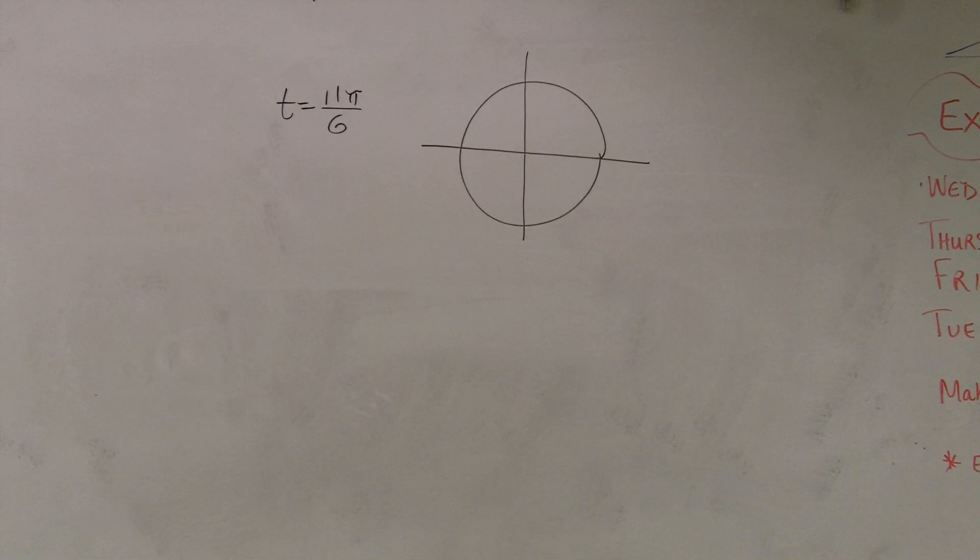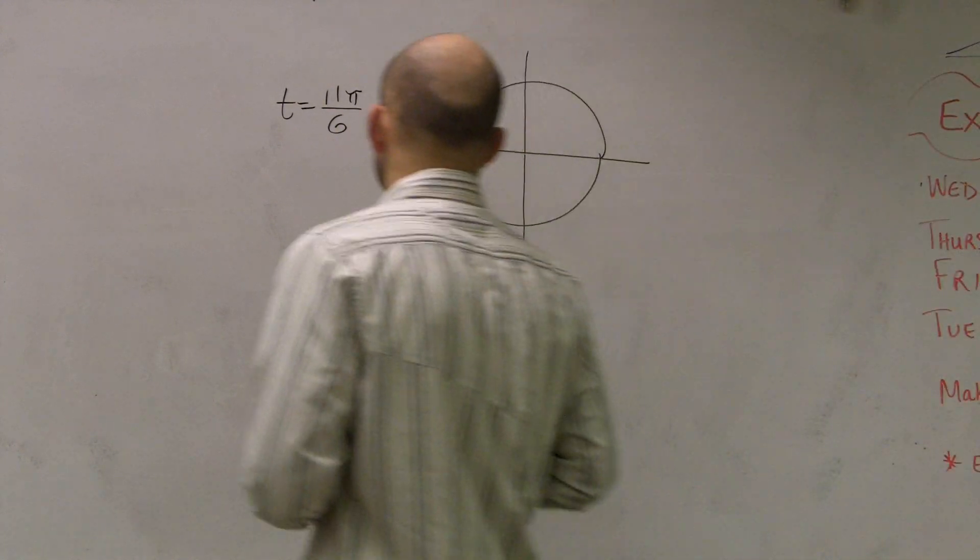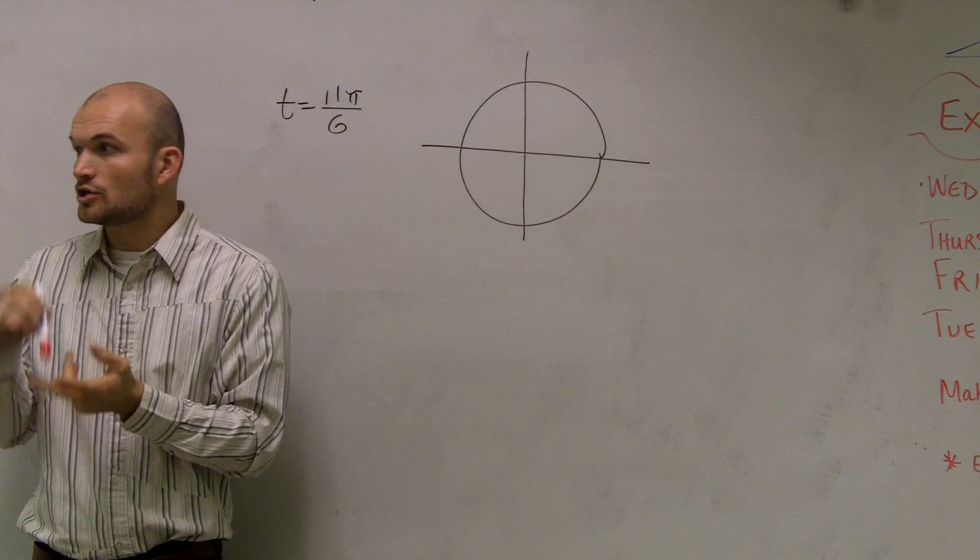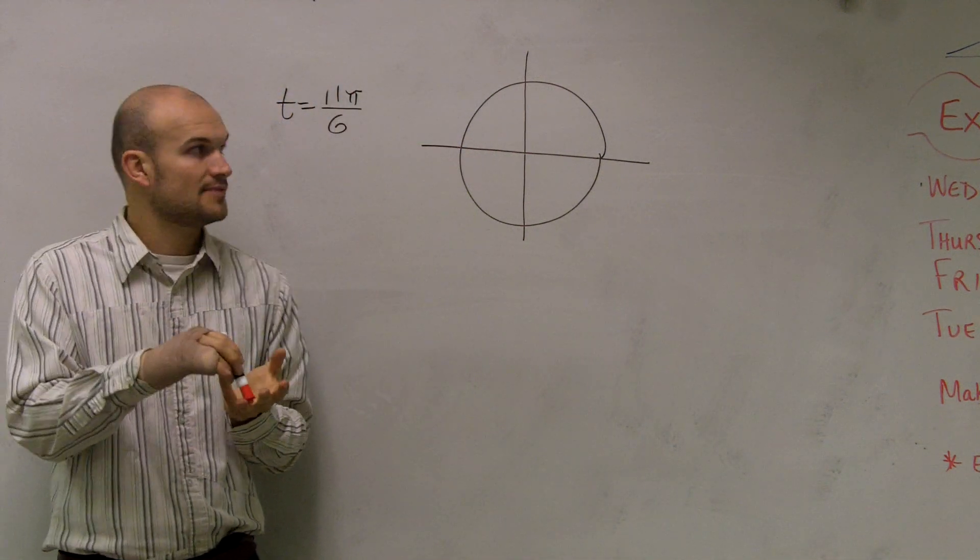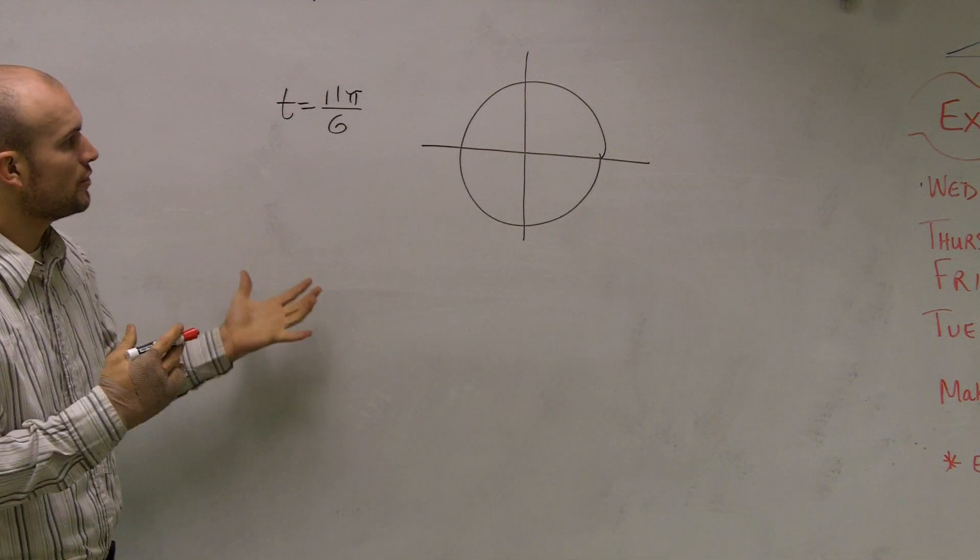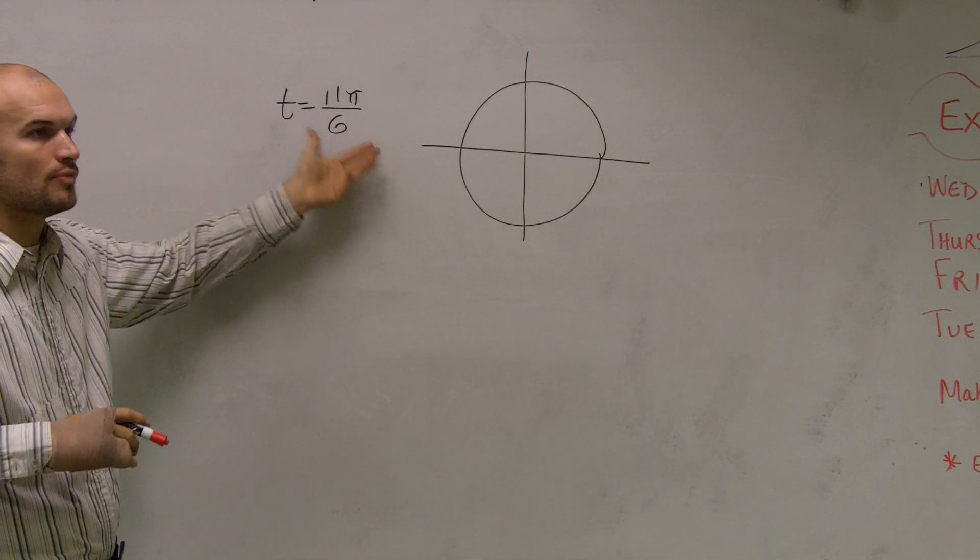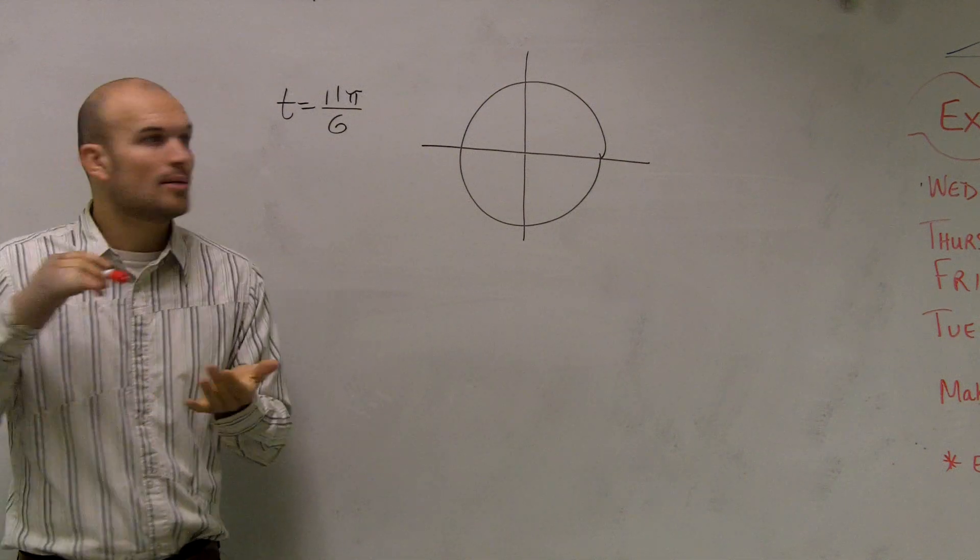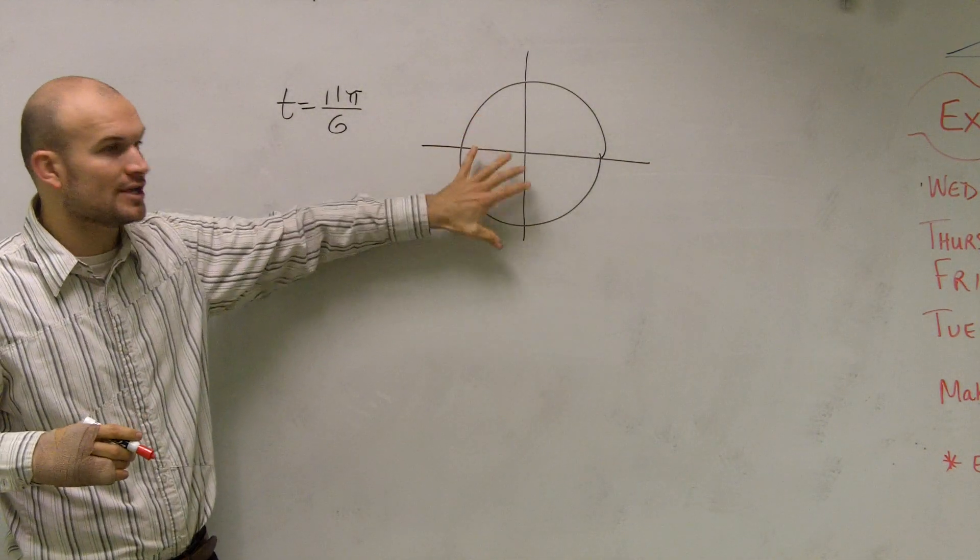For this problem, we want to evaluate sine of t, cosine of t, and tangent of t. First, we need to determine where is this point 11π over 6. This is one of the most crucial points you need to know on a unit circle.